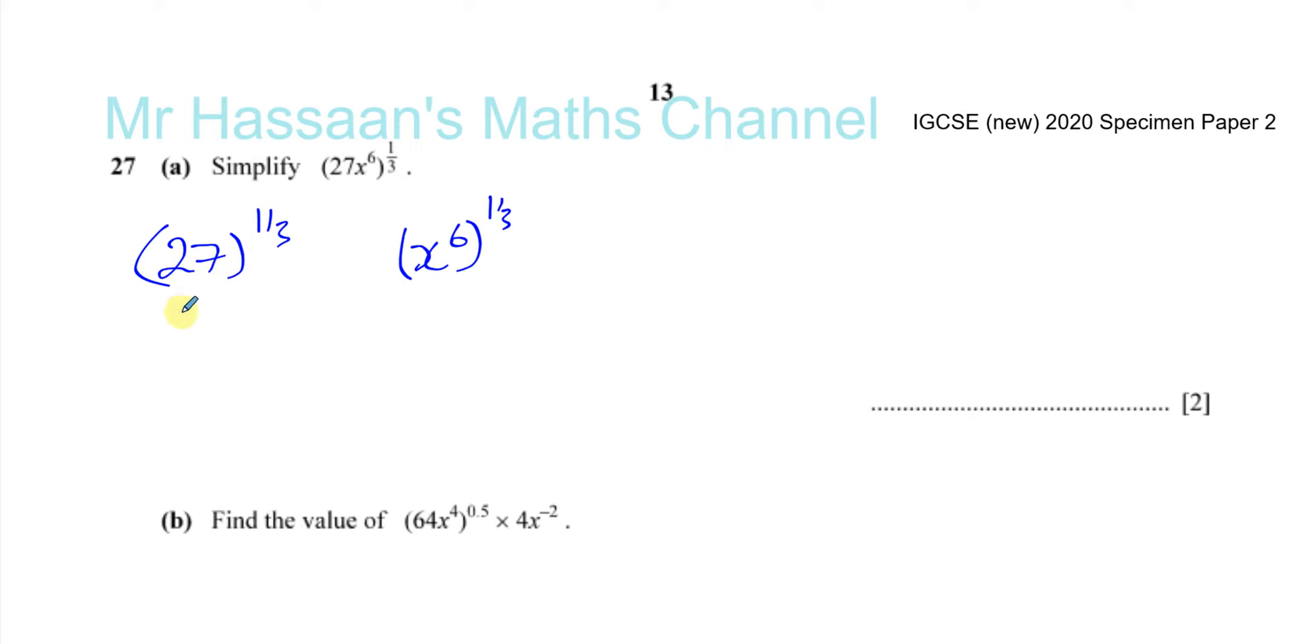With the numbers, I like to use square roots and powers. So 27 to the power of a third, if you remember the rule, a to the power of 1 over m is equal to the mth root of a. So this means the cube root of 27, and the cube root of 27 is equal to 3.